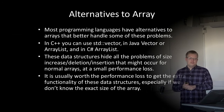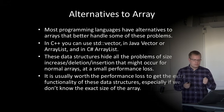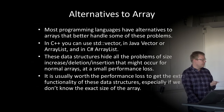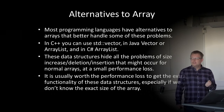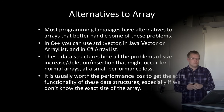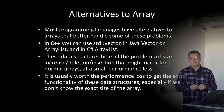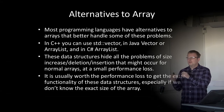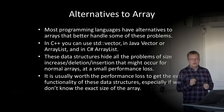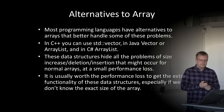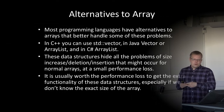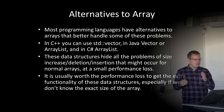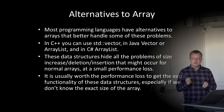If arrays are not suitable we have alternatives that better handle these problems. In C++ you can use the std::vector class, in Java you can use Vector or ArrayList, and in C# there are ArrayList and other alternatives. These data structures hide the problems of size increase, deletion, and insertion at a small performance loss. We should be aware that a vector or ArrayList is implemented with a basic array and it takes some time to make them grow or to insert and delete items in the middle. It's usually worth the performance loss to get the extra functionality, especially if we don't know the exact size.